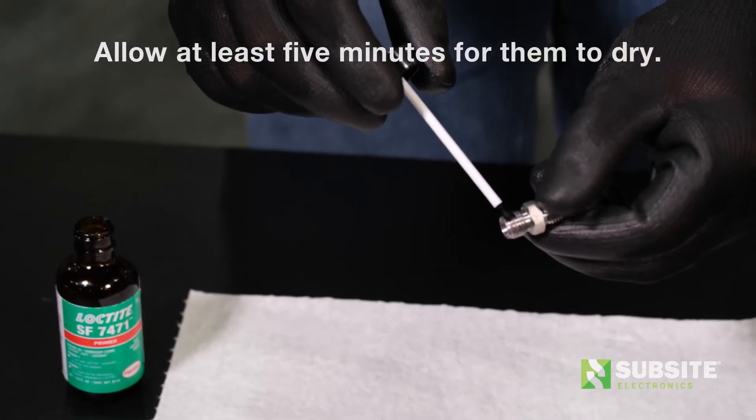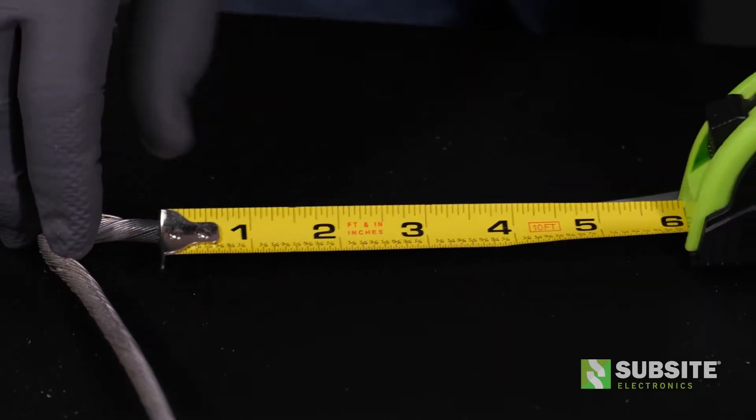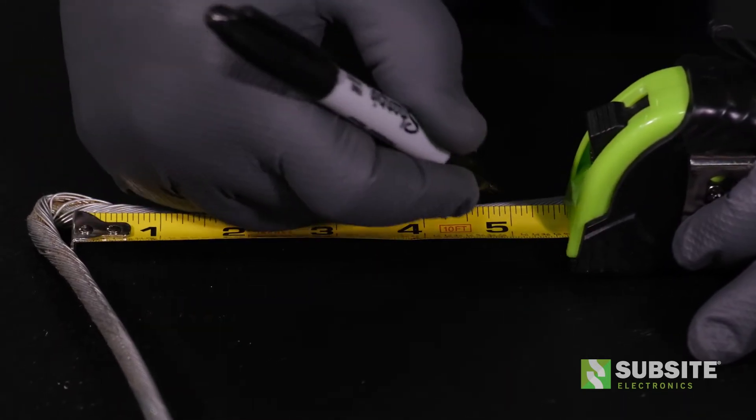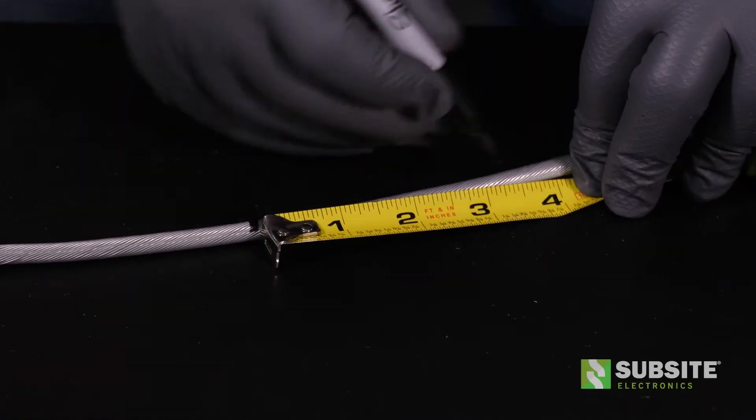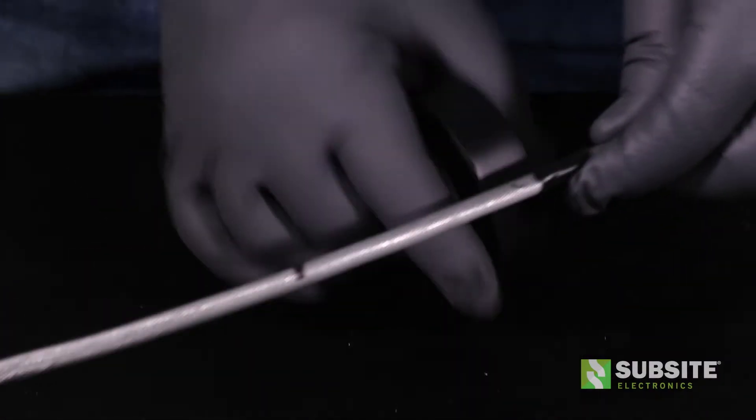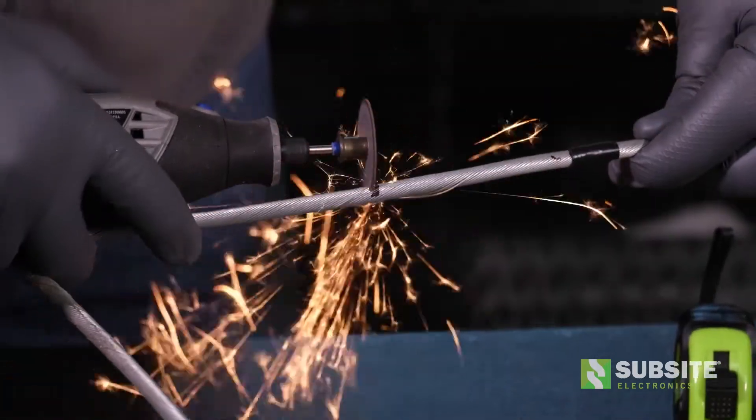Now you can begin the re-termination process. Locate the damage on the cable. Measure 5 inches from the damage toward the reel. This is where you will cut the cable. Measure another 3 inches from the cut location toward the reel and wrap black tape around the cable to prevent fraying. Using the Dremel, cut completely through the cable to remove the damaged section.